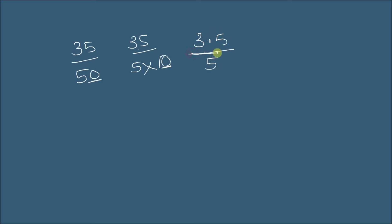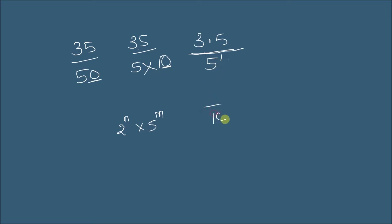For terminating decimals, we find that these are all terminating decimal expansions. The denominator can be written in the form 2 to the power n multiplied by 5 to the power m. Here, the denominator is 5 to the power m where m equals 1. To convert to decimal expansion without division, we convert the denominator into a power of 10, so we write it as 2 to the power 1.